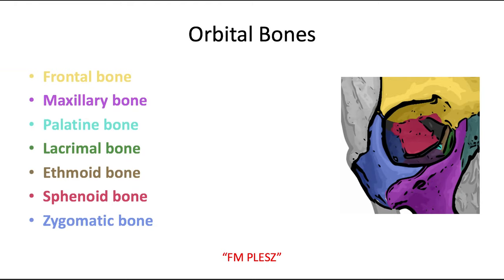Let's finish up with some high-yield facts, starting with what bones make up the orbit — test examiners love asking about this. A great mnemonic: imagine an astronaut orbiting in space who really wants to listen to the radio and says 'FM please.' FM please stands for frontal, maxillary, palatine, lacrimal, ethmoid, sphenoid, and zygomatic.